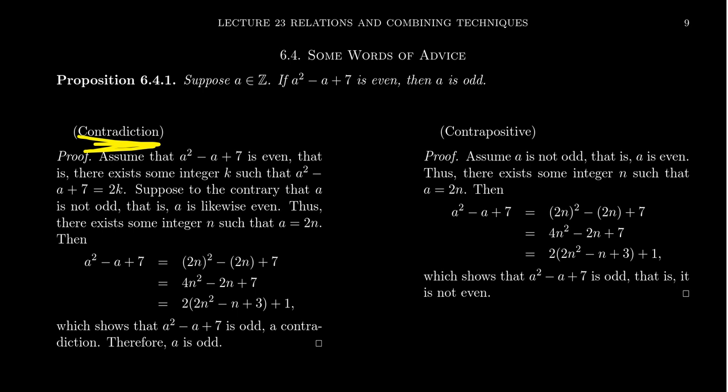Now, as a reminder, in the previous video for lecture 23, we were talking about how you can prove conditional statements, P implies Q. And I mentioned there's a lot of options you have there. There's direct proof, there's proof by contrapositive, and there's proof by contradiction.